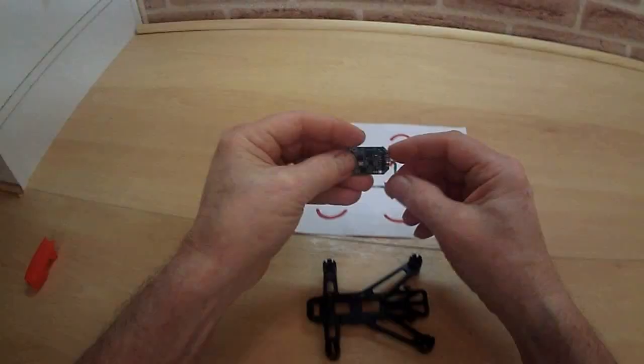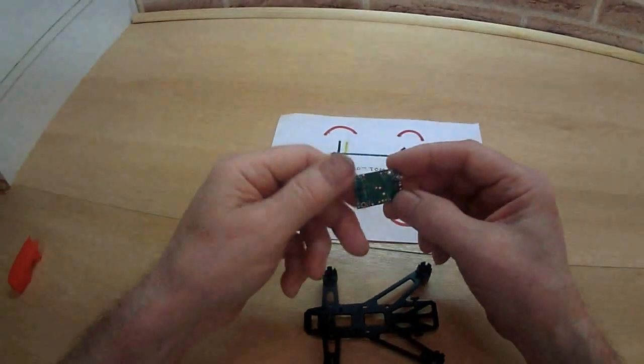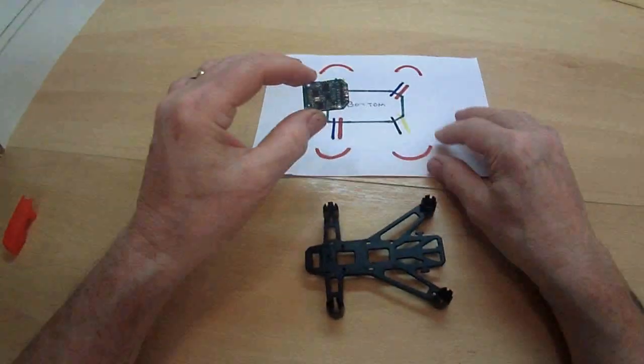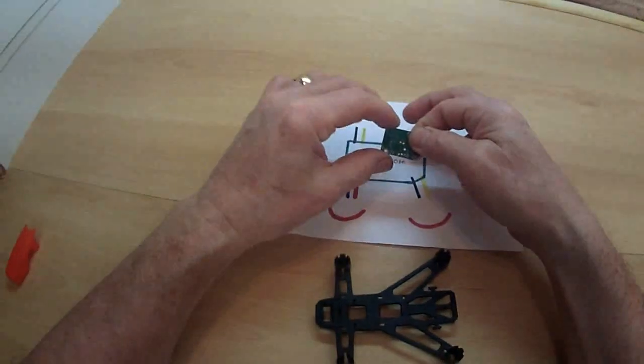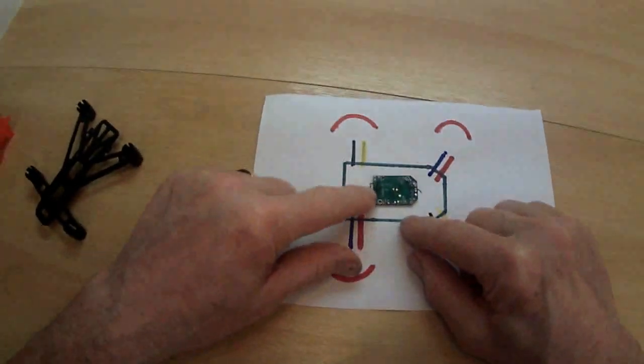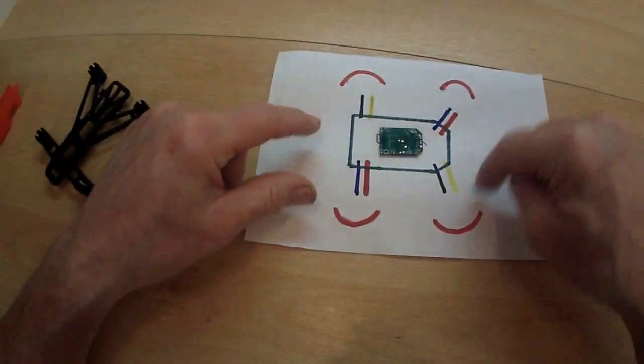The circuit board we're using is the Hubson. Now I'll put the description again, all the bits I'm using I'll put the description down. And obviously the bottom is this way. And we're going to wire the wires up, black and white, blue and red.